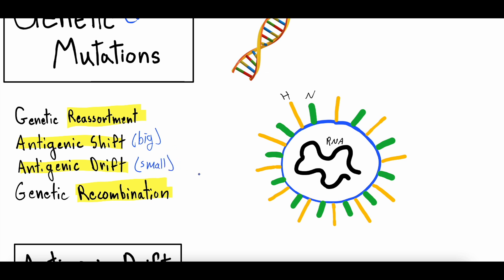Both of these can be very powerful. If that small mutation from drift is something significant, it can totally change that virus. If there's a mutation in one of the viral receptors that then leads to being more likely to infect humans, even though it's a small single mutation, it can still have a big effect. Antigenic shift though is more likely to have a big effect because so many parts of the virus have changed. For drift, it's almost luck of the draw — most of the time these small mutations don't really have any significant effect on viral function.